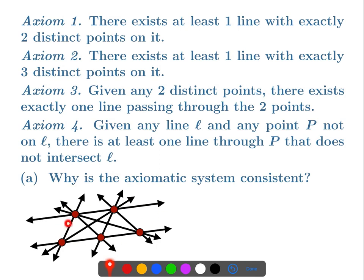So this will be a model for the axiomatic system — each of the axioms holds. Now we're going to want a second model. What we could do is just add another line. This new model consists of the whole thing we had before plus another line. There's still a line with exactly two points, a line with exactly three points, any two distinct points still have exactly one line through them, and axiom four still holds. So we have two models for these axioms.